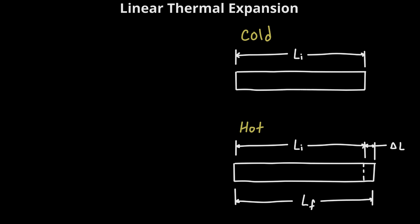So now with our hot object we've got Lf, that's going to be the final length of our object, and then ΔL, that'll be that small change in length. And I just want to point out here that that change in length is going to be very tiny and we'll see that when we do an example here.